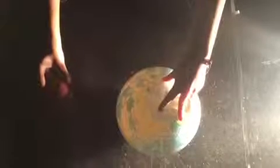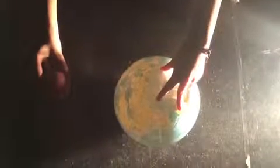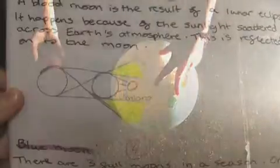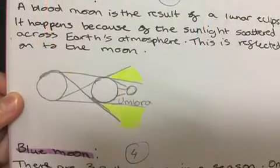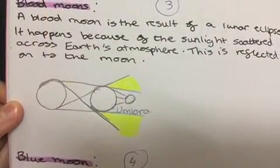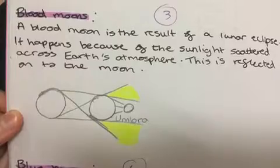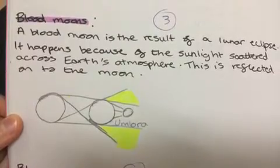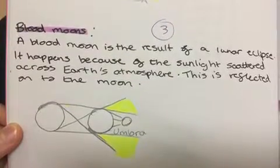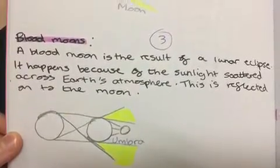Here's another picture of the lunar eclipse. A blood moon is the result of a lunar eclipse. It happens because the sunlight is scattered across Earth's atmosphere, and this is reflected onto the Moon.